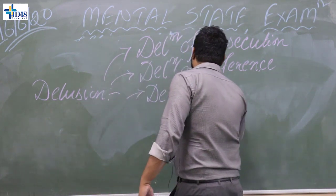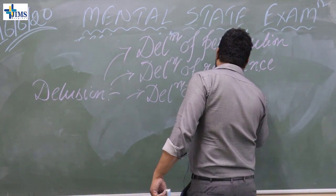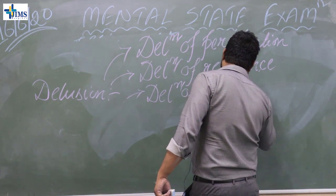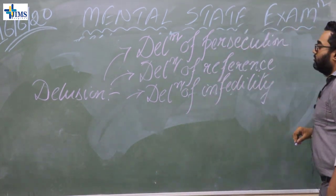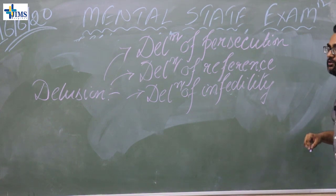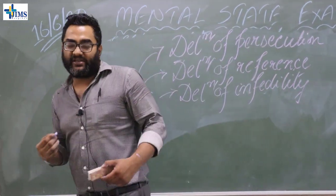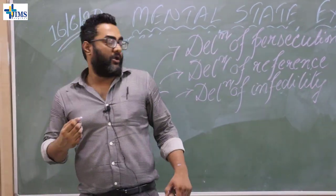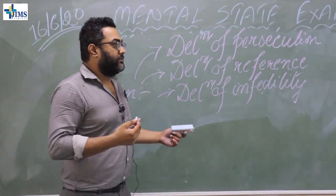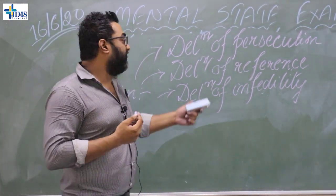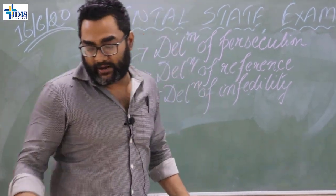Then there is also delusion of infidelity. As the name suggests, the patient will think that his or her spouse is having an extramarital affair. This is very difficult to verify because most of the time it can be true or it can be false.